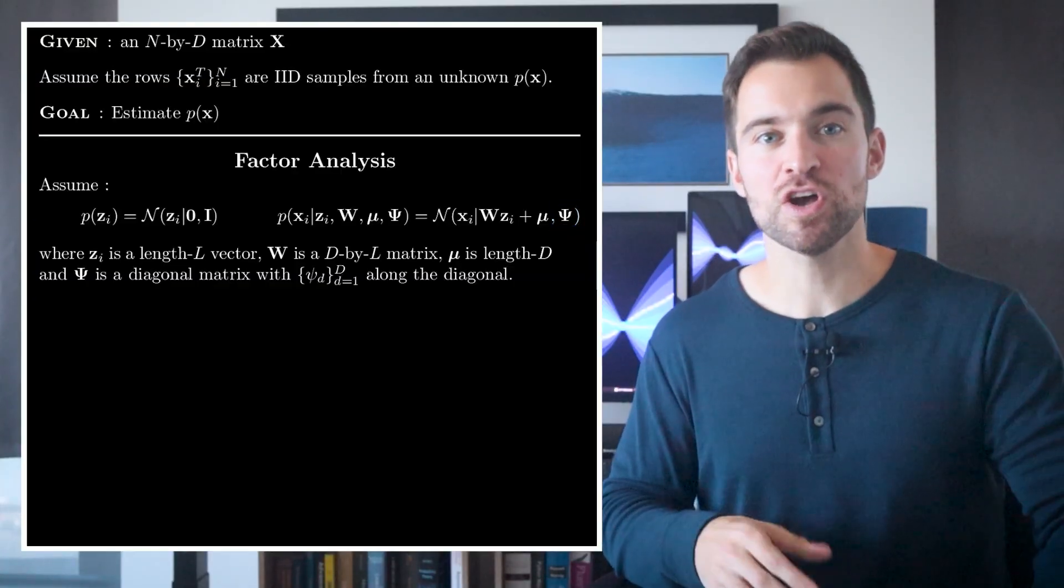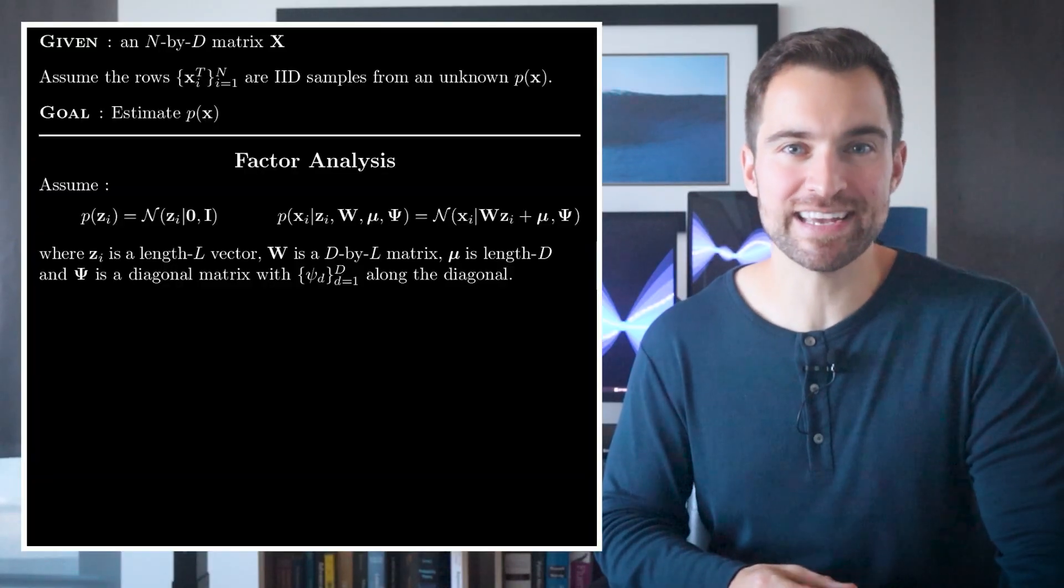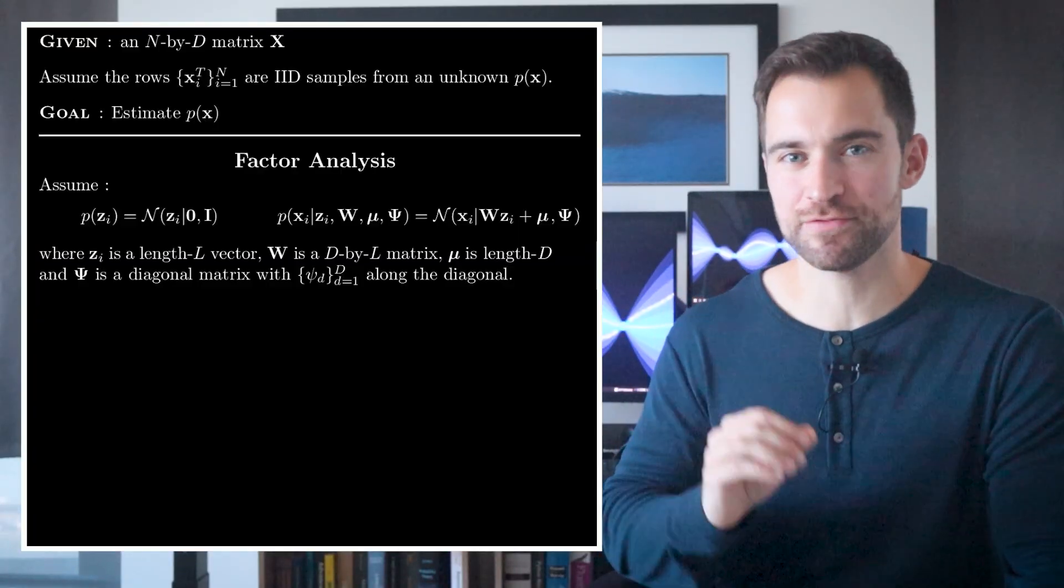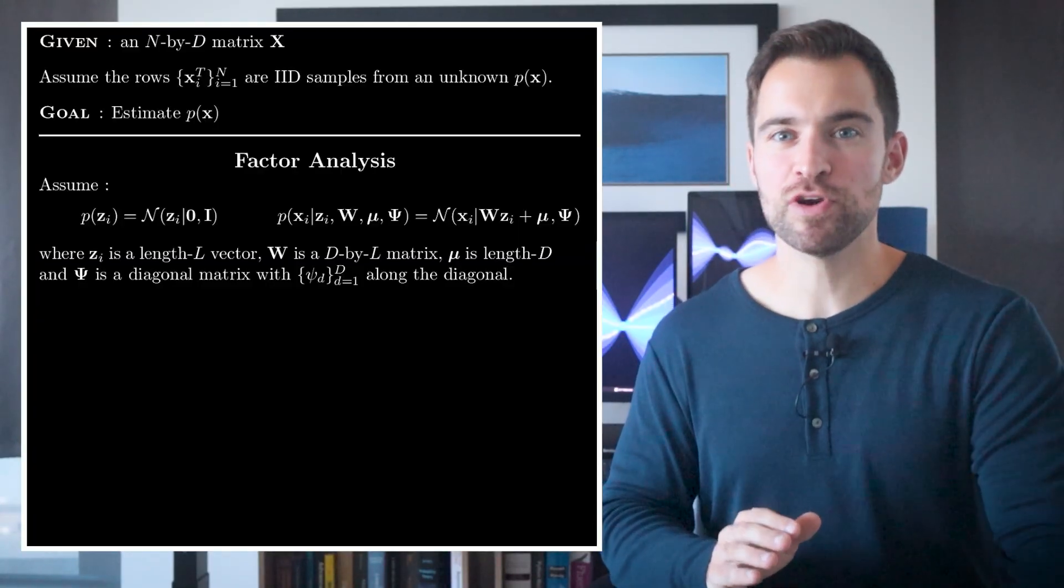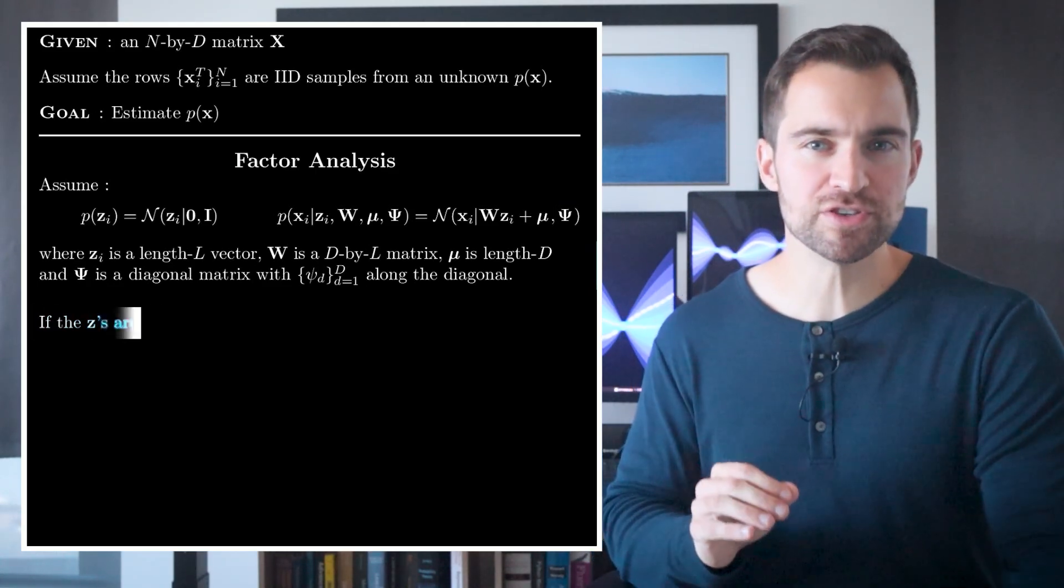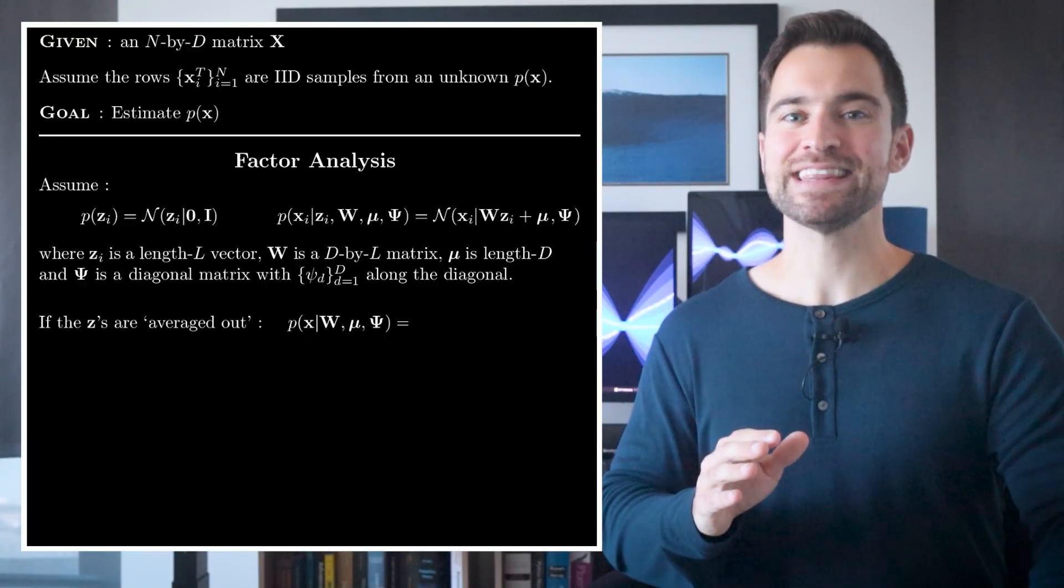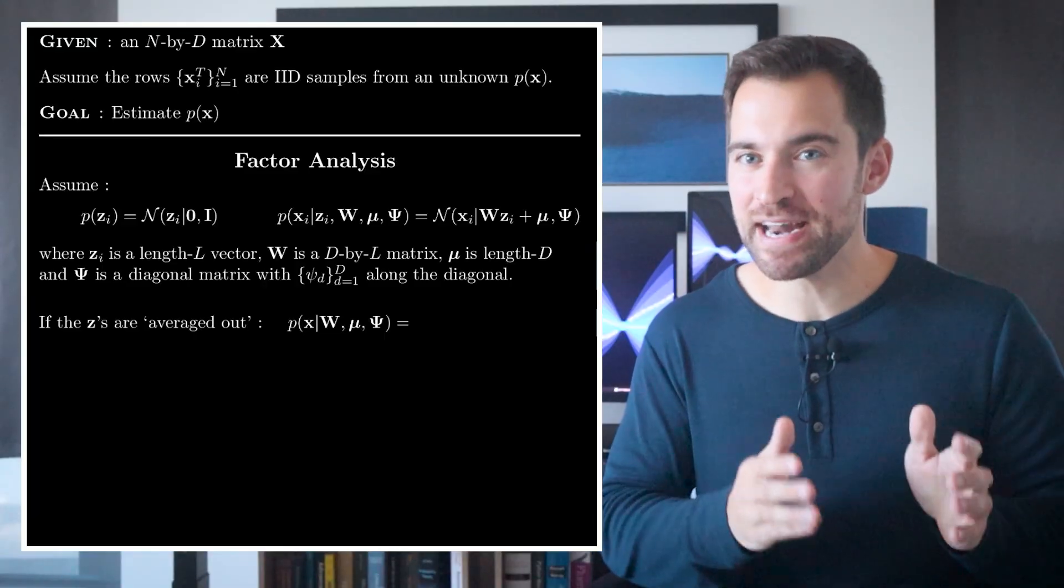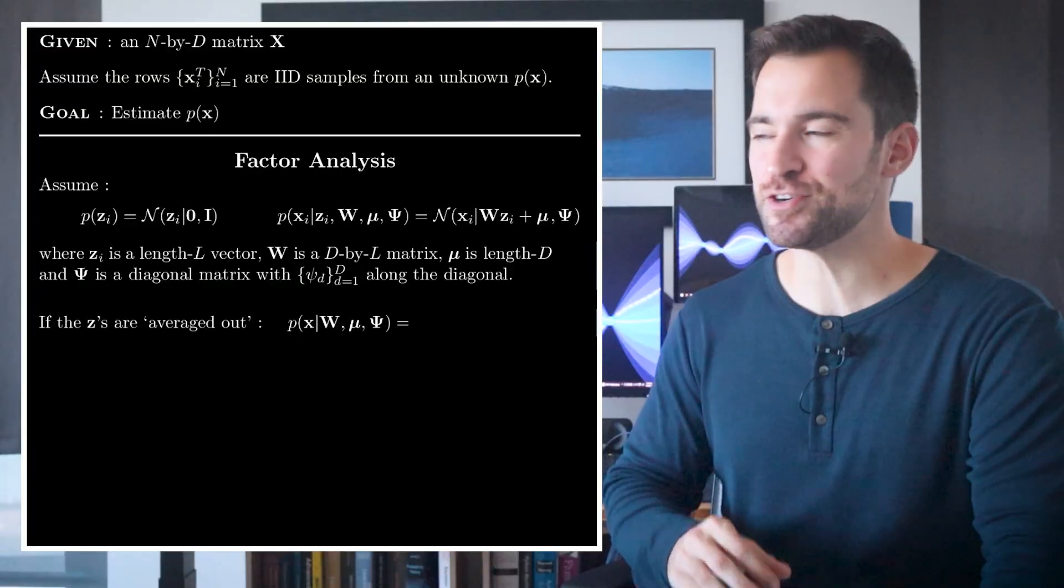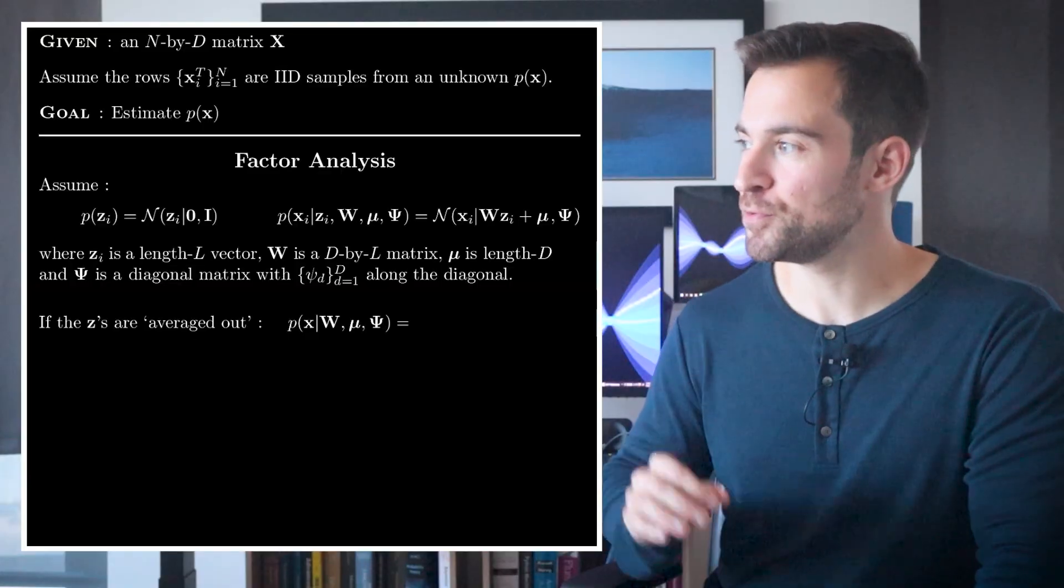If we chose our parameters correctly, this sample should look like it came from our data. And now, we can see a motivation for this model from a different angle. Let's pretend again that our parameters W, mu, and psi are known, and let's ask the question, what distribution over X does this imply? Remember, that's our goal after all. In other words, let's say we repeatedly sampled Zs to generate many, many Xs. What distribution would those Xs have? Well, fortunately, the answer is pretty simple. The distribution of X would be given by yet another multivariate normal, which is this.